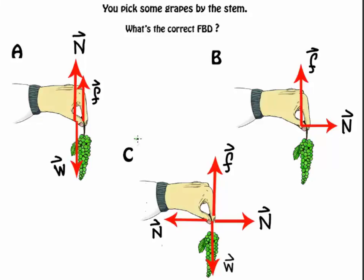The correct answer is C. In A, the normal force can't be upwards because we don't have a surface that is exerting a force vertically. In fact, we are holding the grapes just by the tip of the stem, so it's this surface that is contacting with the hand.